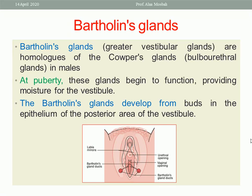The Bartholin glands, also called the greater vestibular glands, are homologous to the Cowper's glands — also called the bulbourethral glands — in males. At puberty, these glands begin to function, providing moisture to the vestibule. As seen in the picture, this is the Bartholin gland and its duct, which opens in the vestibule. The secretions act as a lubricant during intercourse.